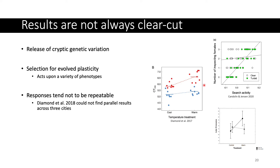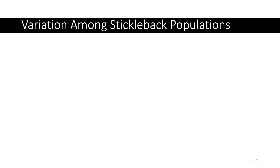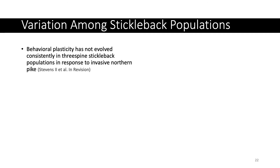However, the responses aren't always this clear cut. Diamond et al. in 2018 looked for parallel results of evolved thermal tolerance and thermal minimums in acorn ants across three cities and could not find consistent results among them. I also tried to find more consistency in behavioral responses in stickleback in response to northern pike invasion. This time, rather than manipulate chemical cues, I manipulated predator exposure directly — I took a model northern pike, measured stickleback behavior for five minutes, attacked them with the model pike, and then measured their behavior again to see if behavioral responses had evolved consistently.